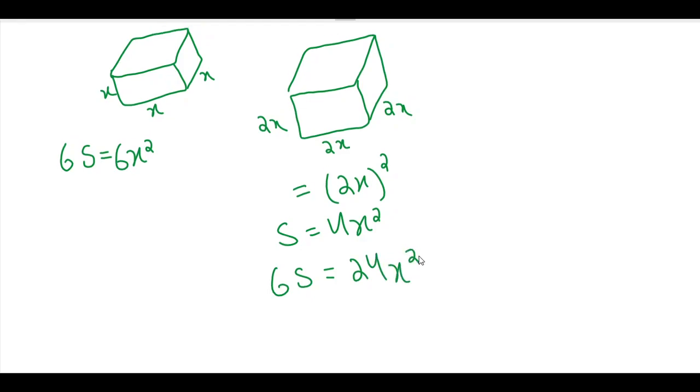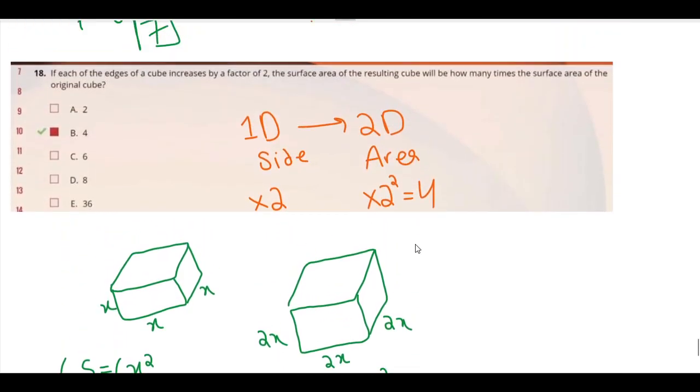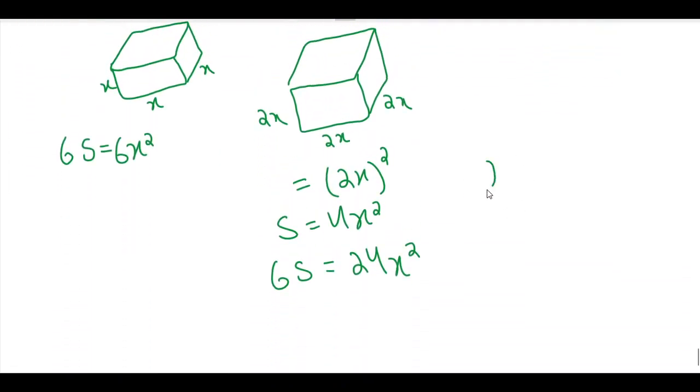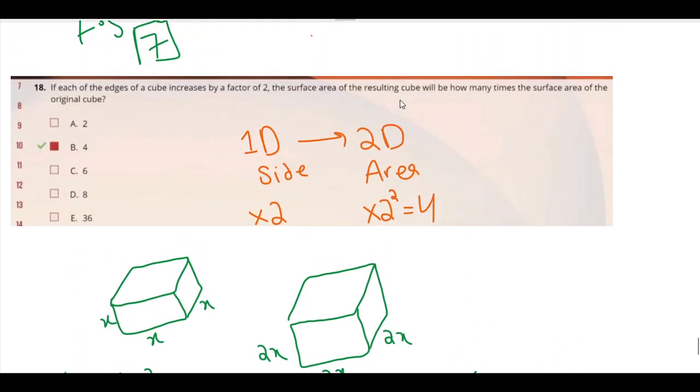Now all the thing which remains is I need to find the ratio. How many times? So 24x squared is how many times 6x squared? X squared goes out. Six into four is 24. And we got the same answer over here.